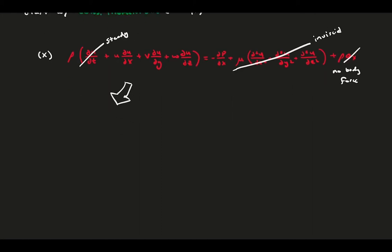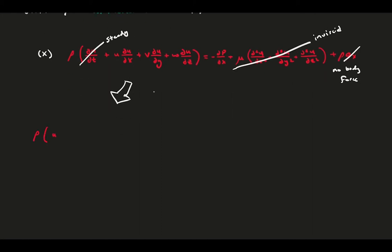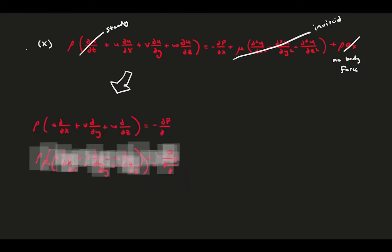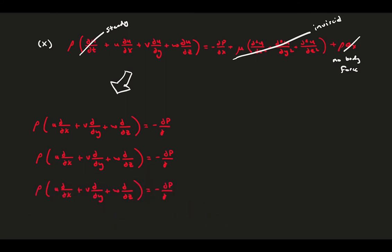This gets us the flow acceleration in space, or the convective acceleration, is due completely to a pressure gradient. This is the same in all three directions x, y, and z.